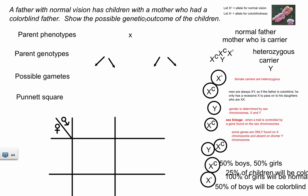The question says: a father with normal vision has children with a mother who had a colorblind father. That's a lot of information. Show the possible genetic outcome of the children. I highly recommend that after you watch this once, go back and check it out again — you'll be able to see more clearly how I'm figuring this out.